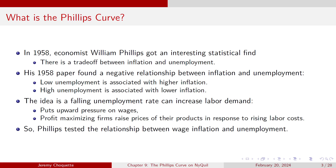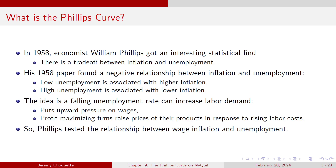Phillips tested this relationship between wage inflation and unemployment — this is stolen directly from the Federal Reserve Bank of St. Louis. He found periods of low unemployment with high inflation, and periods of high unemployment with low inflation.